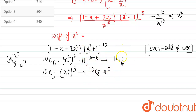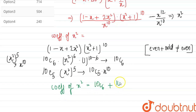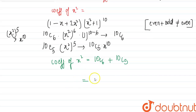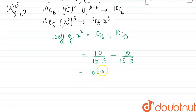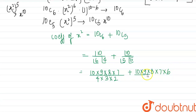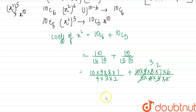So only these two coefficients are possible. The coefficient of x² equals 10C6 + 2 · 10C5. Now simplifying: 10C6 = 10! / (6! · 4!) and 10C5 = 10! / (5! · 5!). This gives (10 × 9 × 8 × 7) / (4 × 3 × 2) + (10 × 9 × 8 × 7 × 6) / (5 × 4 × 3 × 2 × 1).